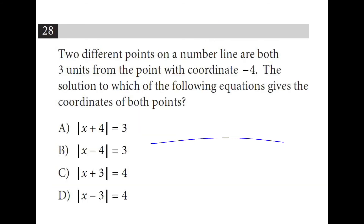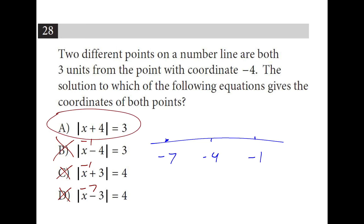If this is our number line and here is negative 4, if I go 3 to the left I'm at negative 7, and if I go 3 to the right I'm at negative 1. If I plug these into the equations, negative 1 doesn't work here, and neither does negative 7. A is the only one that works for both.